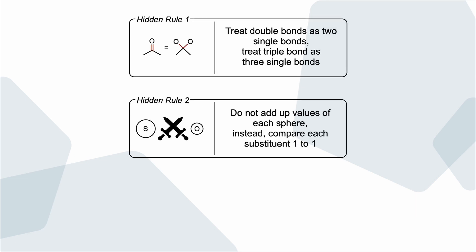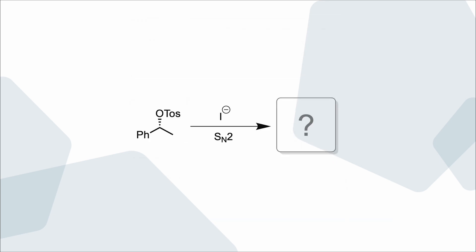Now, the last rule is about the way we draw molecules. Let's say we are supposed to draw a possible product of this reaction and determine its configuration. I often see that the molecule will be drawn like this. If you then try to determine its configuration, you will either struggle or come up with the wrong configuration.